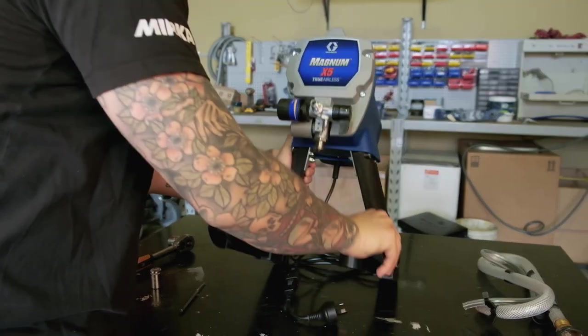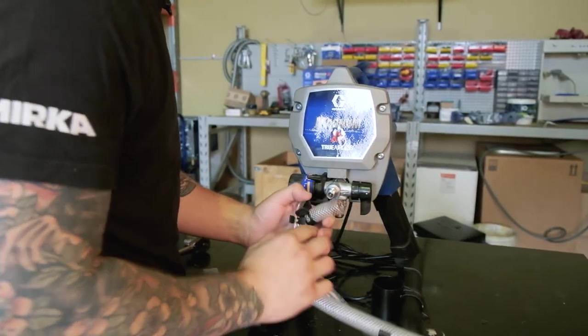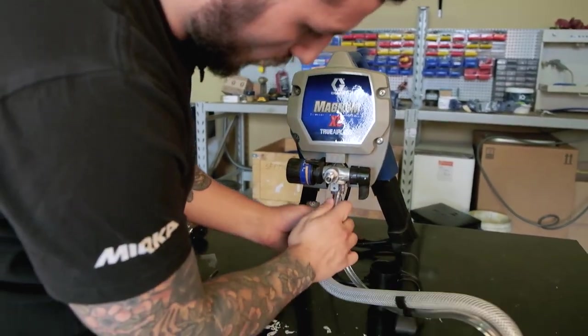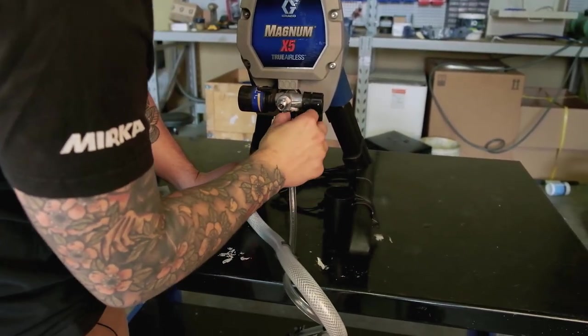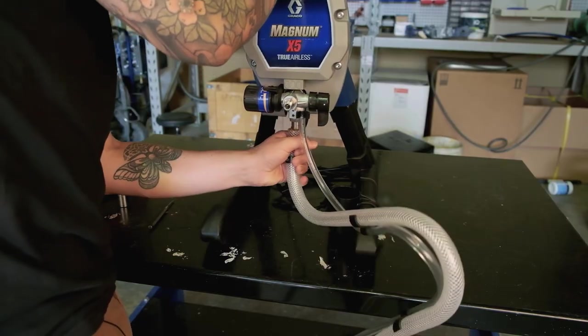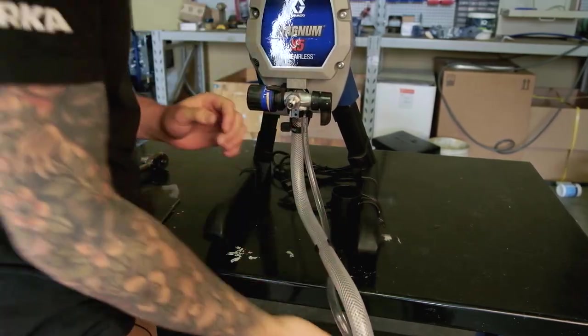So we can stand the unit back up now and reattach our tubes. So we get the drain tube and we'll wiggle that on there, get our clamp, put that over the top, suction tube, wiggle that on and clamp over the top and perfect.